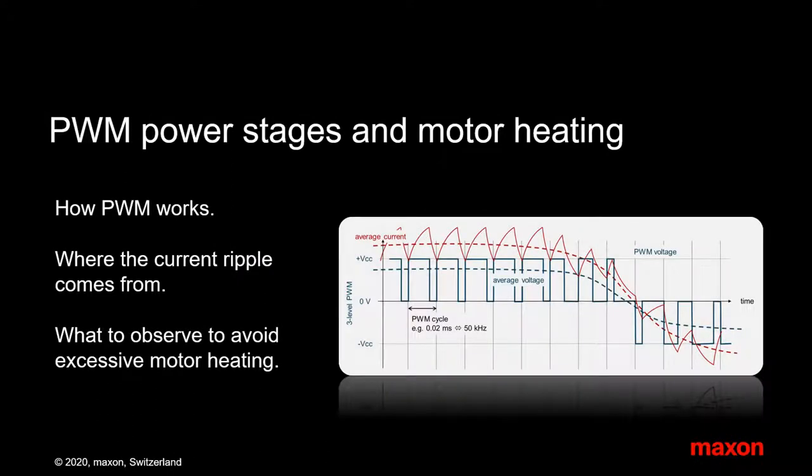Pulse Width Modulation or PWM is a method to generate different average voltage levels in the power stage of controllers in an energy efficient way. However, PWM leads to a current ripple in the motor that can cause excessive heating. This video highlights the process and shows solutions.